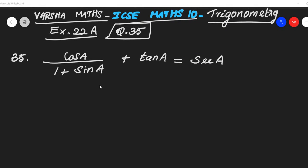Welcome. This is ICC Maths trigonometry lesson, exercise 22A, question number 35. Our LHS is cos divided by 1 plus sin, plus tan, equal to secant theta.